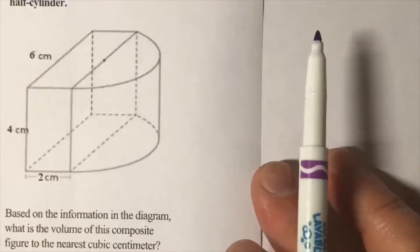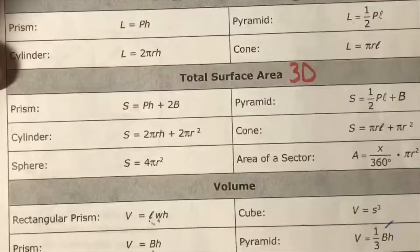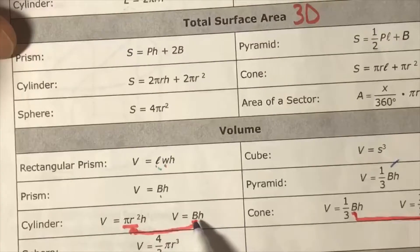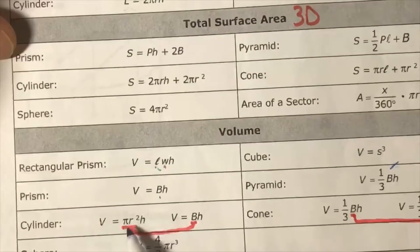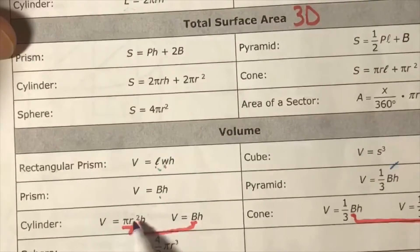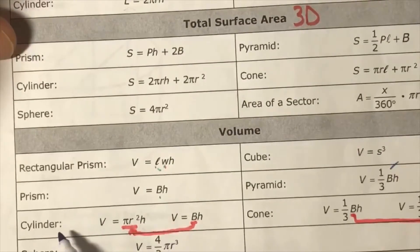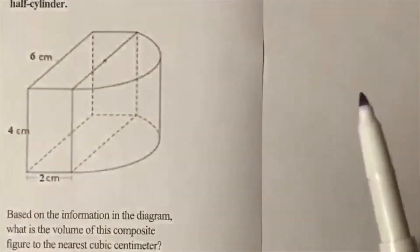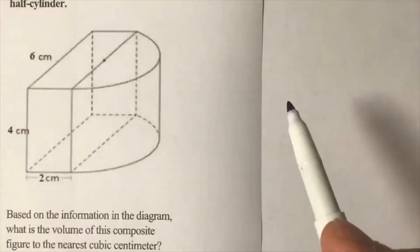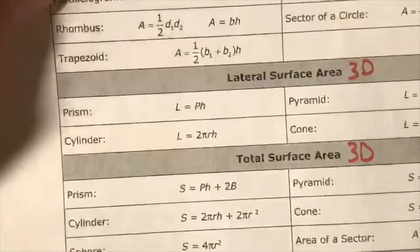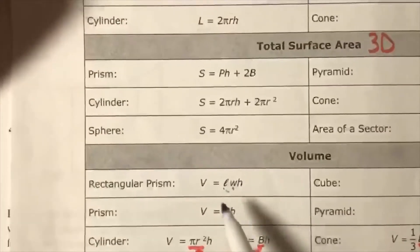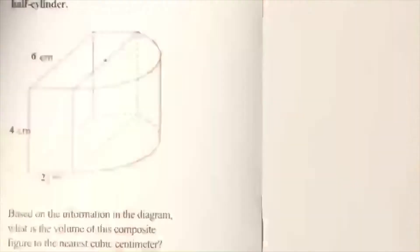Go to your formula chart for volume of a cylinder. Capital B is the area of the base, which is this. We must use pi r squared h when it deals with a cylinder. We must cut that in half because it is a half cylinder. Prism right here: length times width times height.